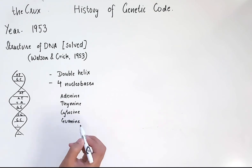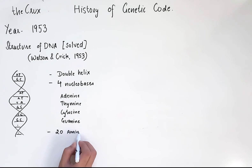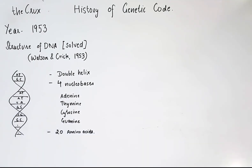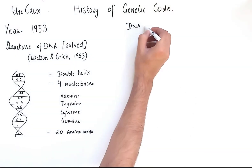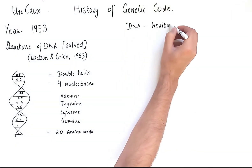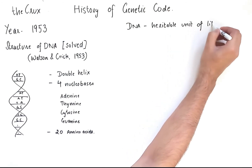Another key piece of information that scientists knew is that proteins are made up of 20 amino acids. Since proteins are made in the cell, scientists hypothesized that the genetic or hereditary unit of life — that is, the DNA — must be responsible for making proteins.